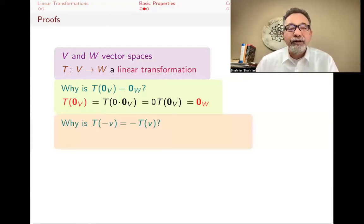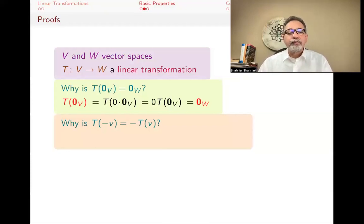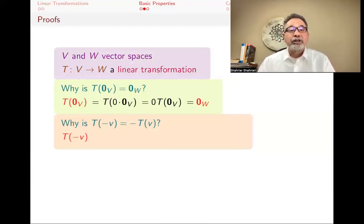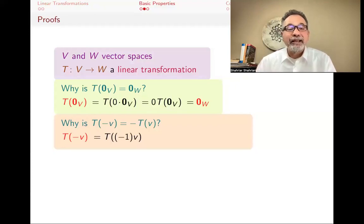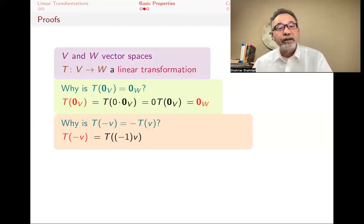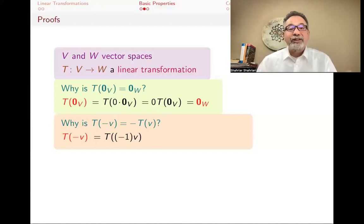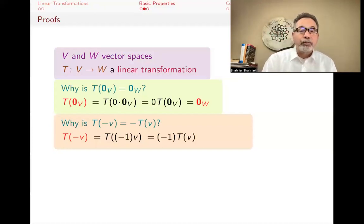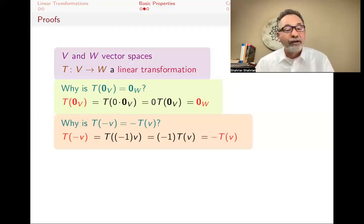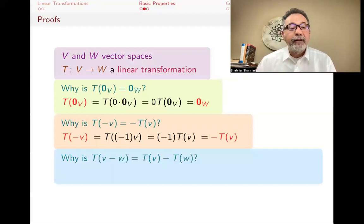Why is T(-V) = -T(V)? One way to prove this is to use scalar multiplication. T(-V) is the same as T((-1) · V). That scalar can come outside, giving (-1) · T(V), which is -T(V). And we're done.